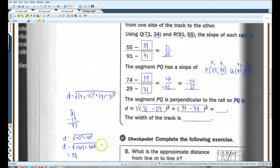So, the width of the track is 58 inches.